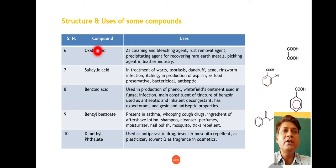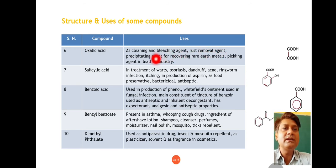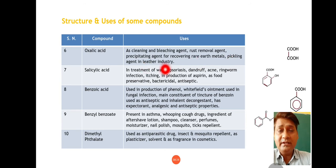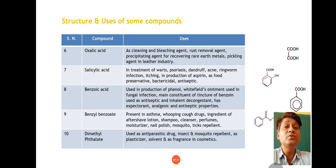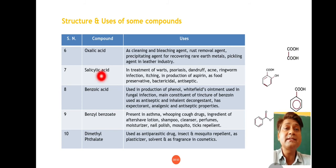Next compound is oxalic acid. Oxalic acid is used as cleaning and bleaching agent, rust removal agent, as precipitating agent for recovering rare earth metals, as pickling agent in leather industry, as solvent, and in titrations — bahut saare chemical reactions mein bhi yeh use hota hai.